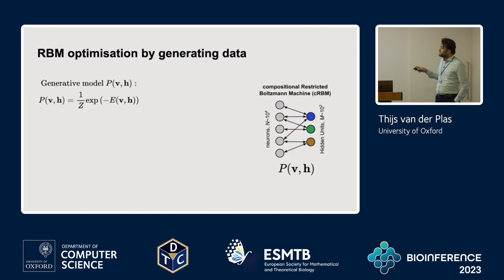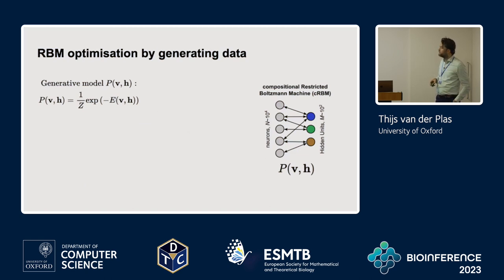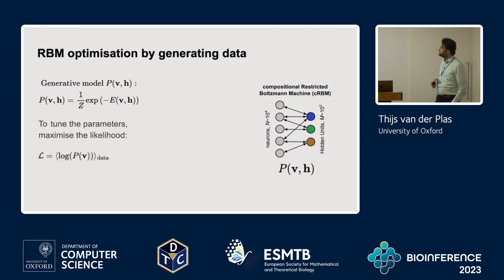When we derive the solution for P for this entropy model, we get the Boltzmann distribution, which defines an energy based on these constraints for every possible state, and tells us which states are more likely and which are less likely. This gives us the shape of the equation, and to find the optimal parameters we maximize the log likelihood of the data.